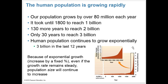Our population grows by over 80 million each year. It took until about 1800 to reach 1 billion, then 130 more years to reach 2 billion, and only 30 years to reach 3 billion. The human population continues to grow exponentially — that's 3 billion in the last 12 years. Exponential growth is the increase in a quantity by a fixed percentage per unit time. By adding over 85 million people each year, this is equivalent to adding all the people of California, Texas, and New Jersey to the world annually — meaning we add more than 2 people to the planet every second.